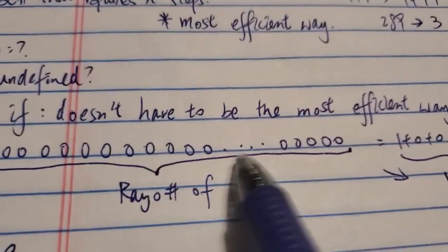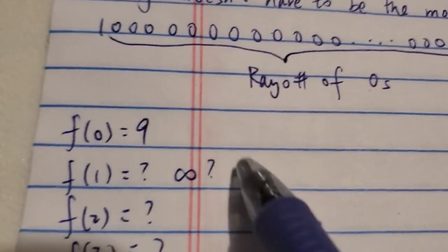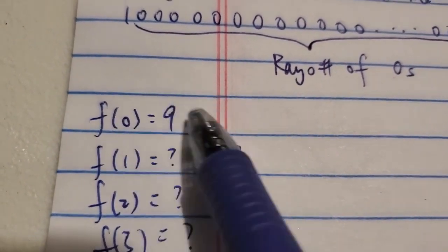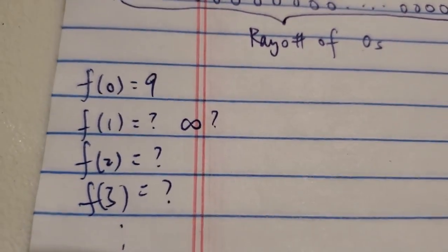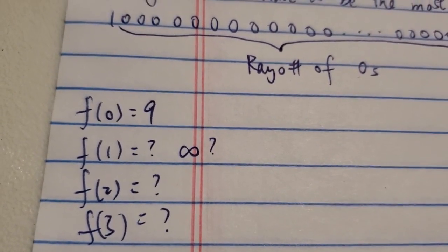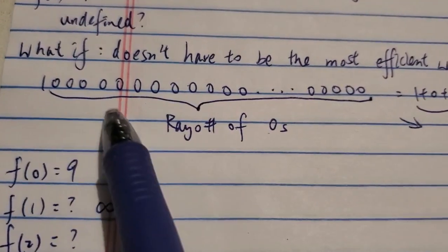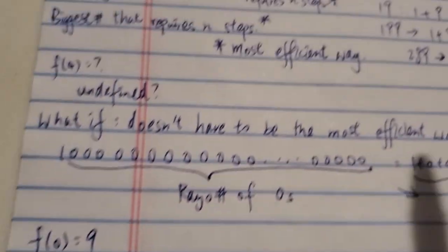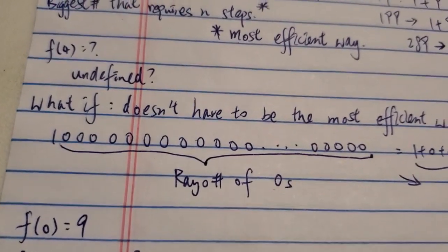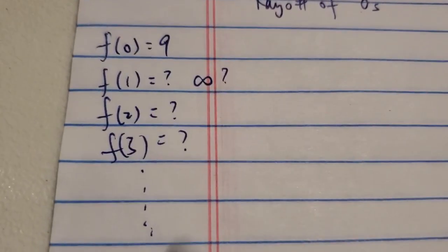So in this case, f0 is still 9 because any single-digit number requires zero steps, so the biggest number is 9. What about fn? fn is already infinity if you don't have to use the most efficient way. What's the biggest number that requires one step? Clearly this is already one example — you can have that very big number, bigger than Rayo's number, and it only requires one step. So f1 is already infinity. If you don't have to use the most efficient way, the least efficient way or whatever, f1 is already infinity.